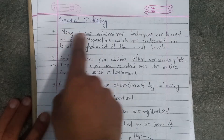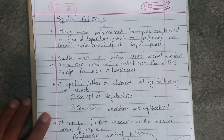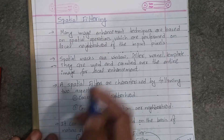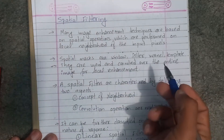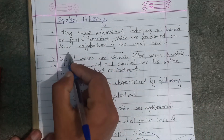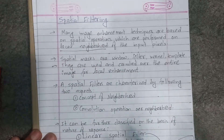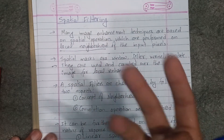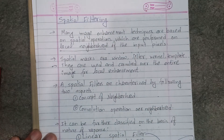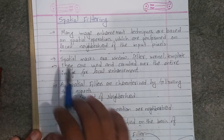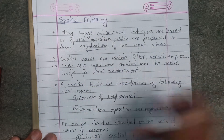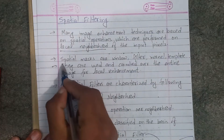Image enhancement techniques are based on spatial operations which are performed on the local neighborhood of the input pixel. We consider the 4-neighborhood, 8-neighborhood, or any neighborhood. The spatial mask — also known as a window, kernel, or template — is the key tool used.